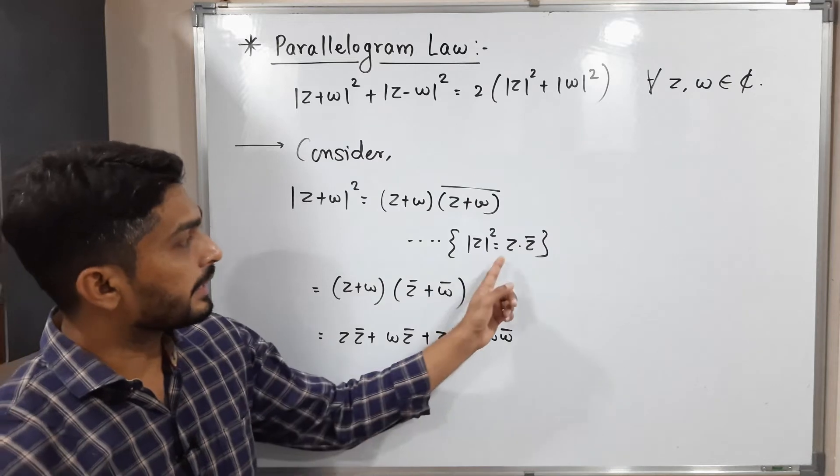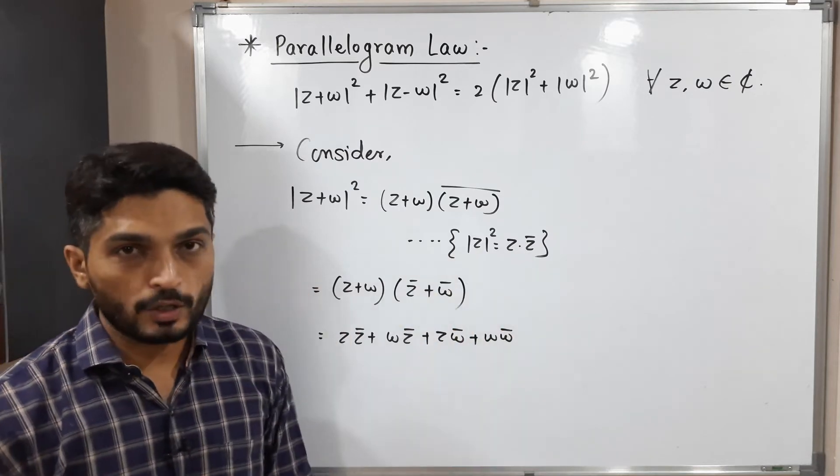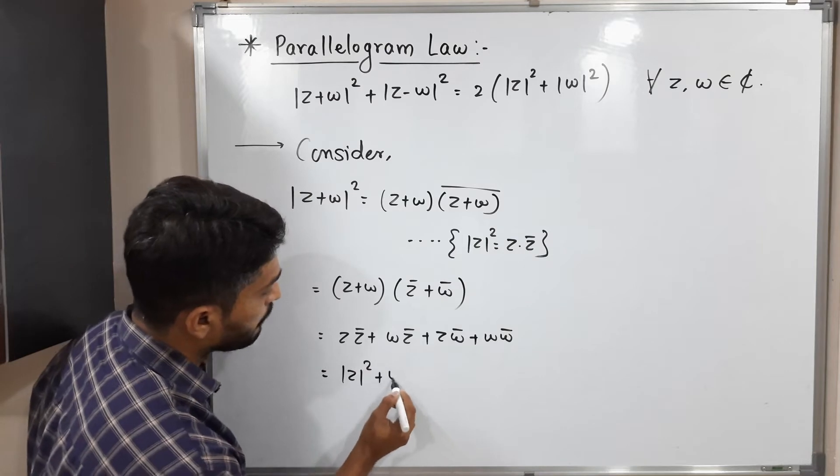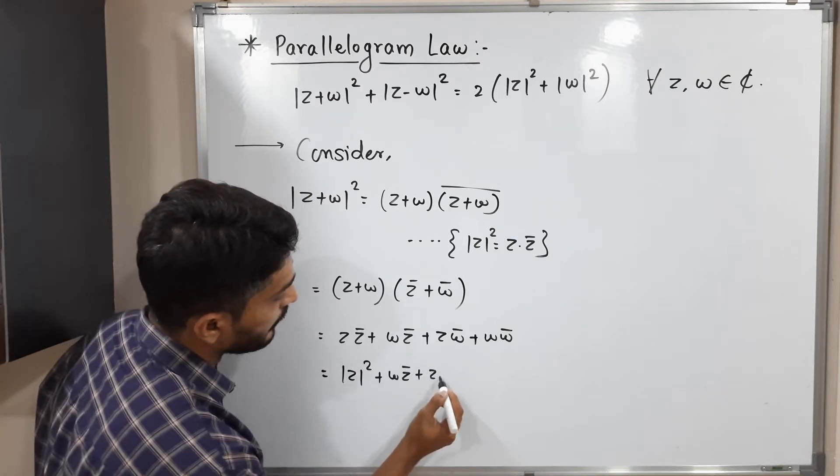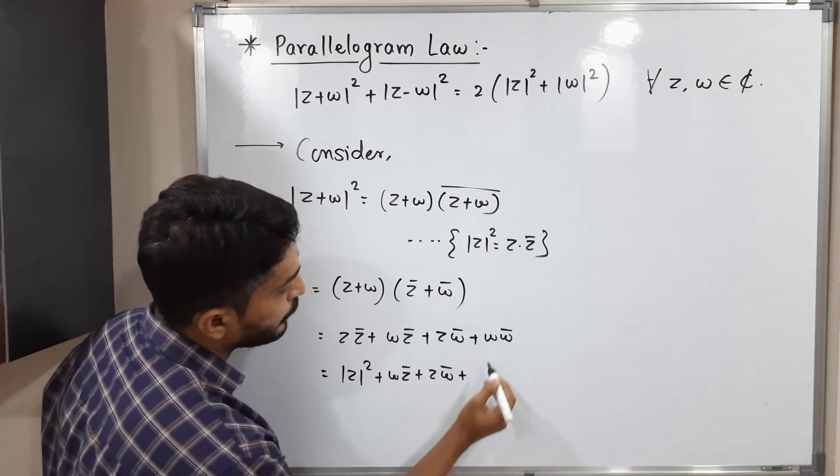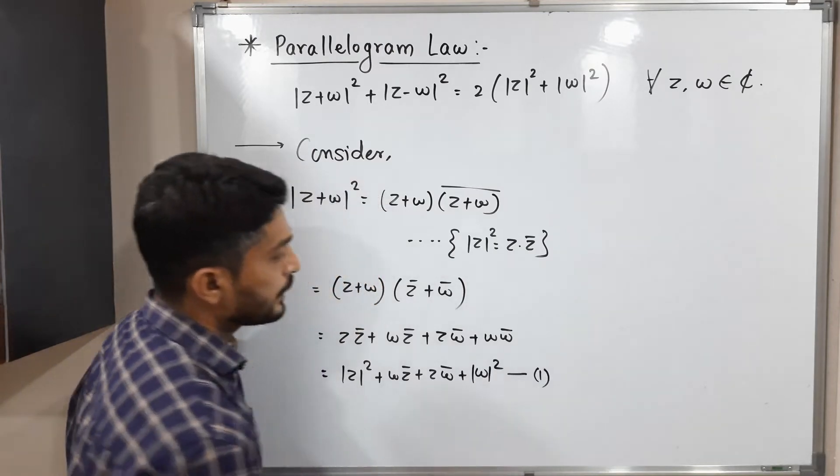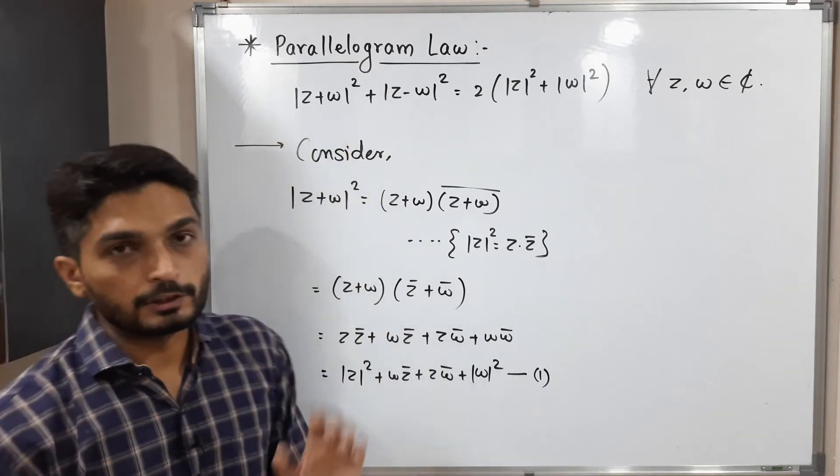So let me use this result again. z into z bar is nothing but mod z square. So we can replace the first term by mod z square. Let me write it as it is. z plus w bar. And w into w bar is nothing but mod w square. Let me call it as 1. So in this way, we found out the value of the first term.